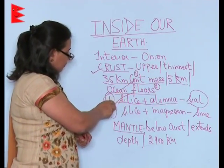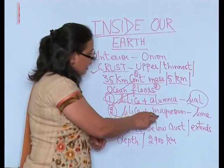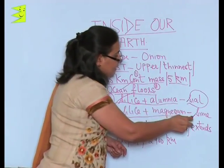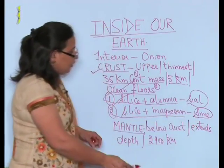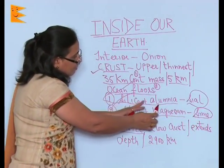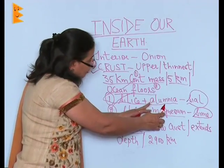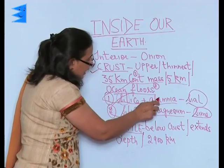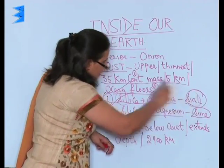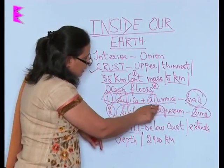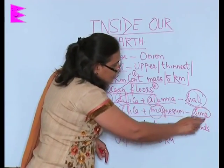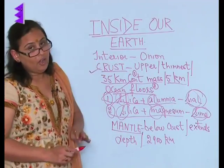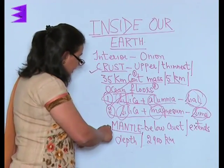The crust on the ocean floor is made of silica and magnesium, which is why it is called SIMA. So silica combined with alumina gives SIL + AL = SIAL, and silica combined with magnesium gives SIL + MA = SIMA.